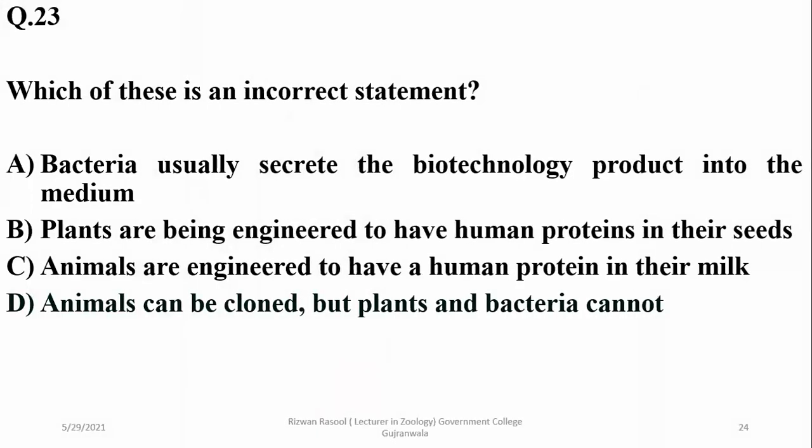Which of these is an incorrect statement? The statement that animals can be cloned but plants and bacteria cannot is a wrong statement. The other statements in the list are correct. Animals, as well as plants and bacteria, can be cloned by various methods.